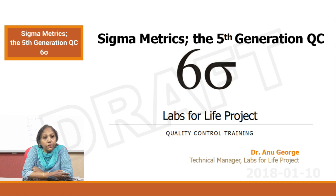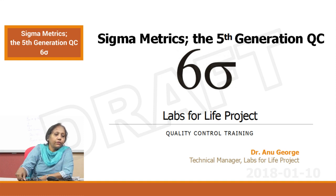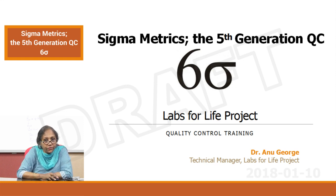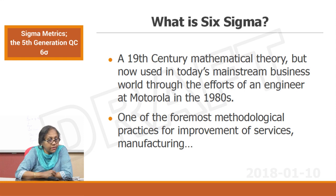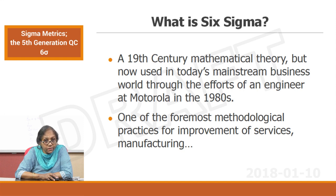We go into the final concepts we will talk about in the internal controlling policies — that is called the sigma matrix. This is the fifth generation quality control. What is six sigma? It is a 19th century mathematical theory, but now used in today's mainstream business world through the efforts of an engineer at Motorola in the 1980s — one of the foremost methodological practices for improvement of services and manufacturing.